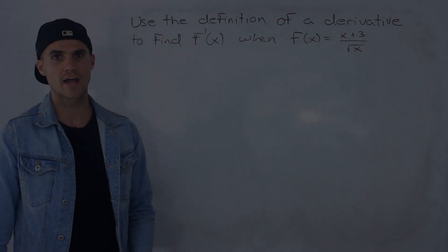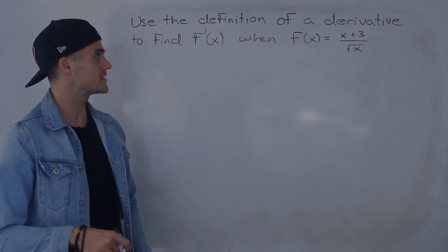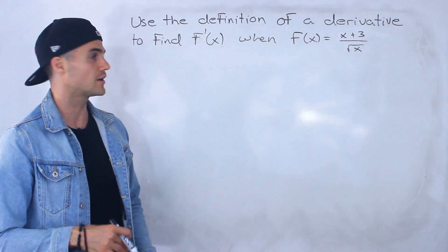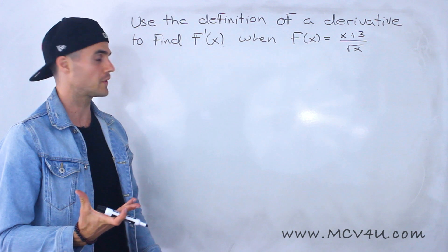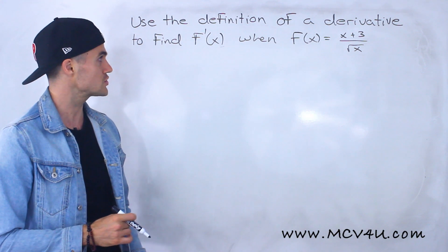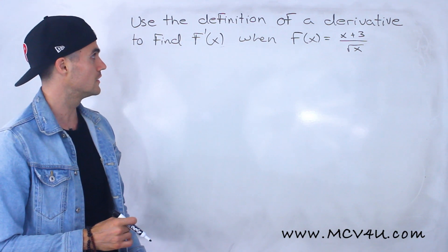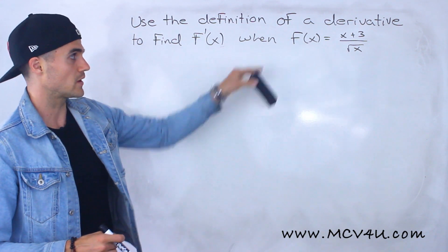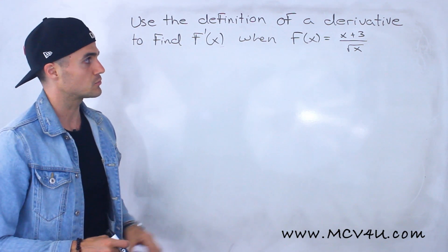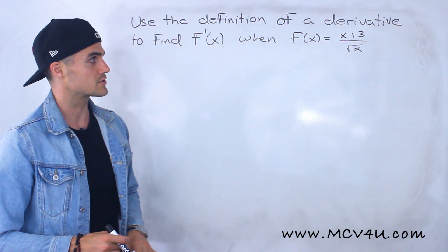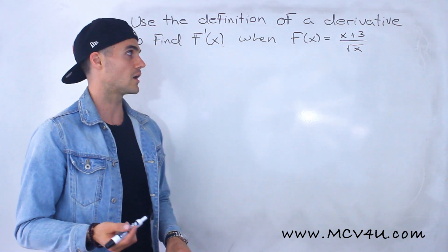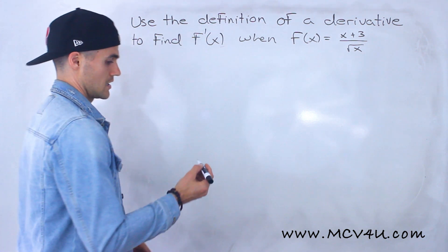What's up, everyone? Welcome back. Patrick here. In this question, we're going to do another example where we have to use the definition of a derivative to find f prime of x when f of x is equal to x plus 3 over the square root of x.